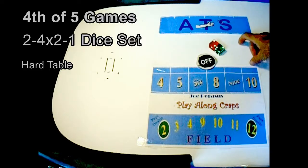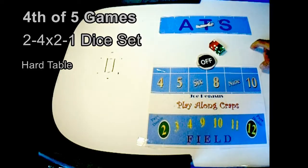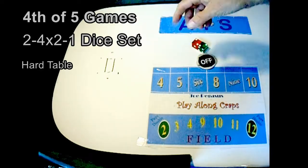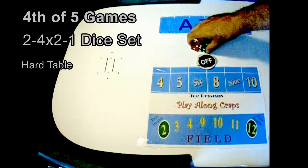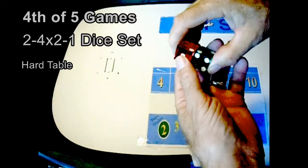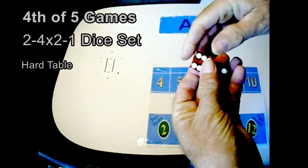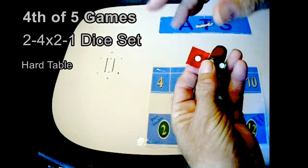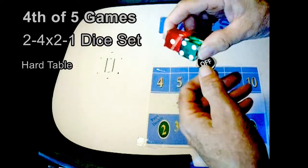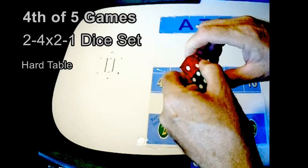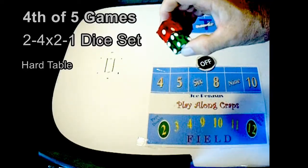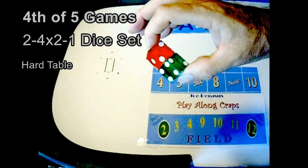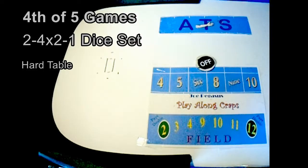Top of the fourth game. Should be the last actually, but let's see how it goes. Maybe we'll just do four games on those depending on how this goes. Here we are, game four, top of game four, two four by two one, hard table coming out.